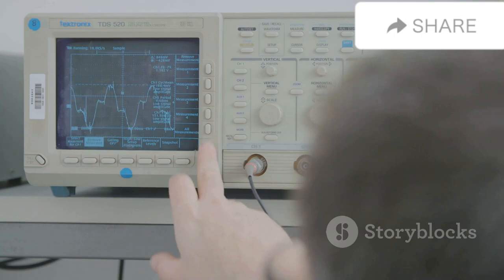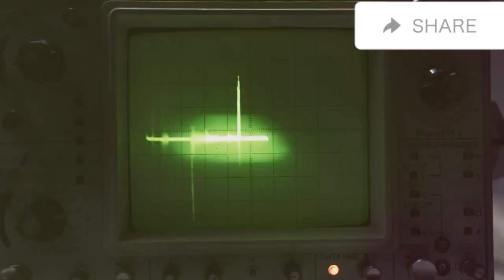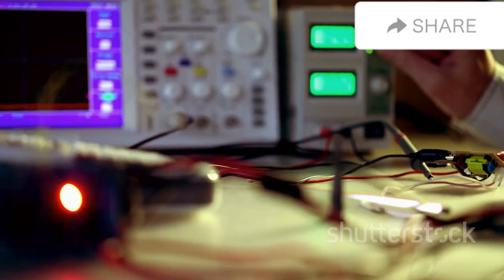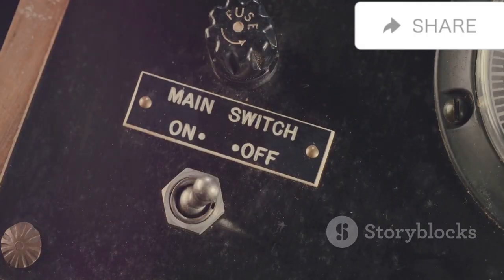First, let's identify the external parts. The display screen that shows waveforms, control knobs for adjusting settings, input terminals for signal input, and the power switch.